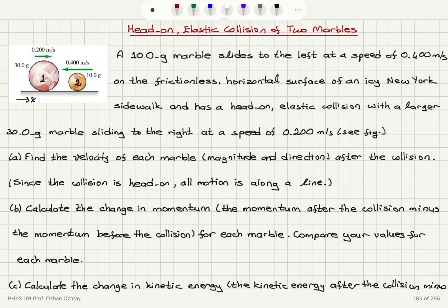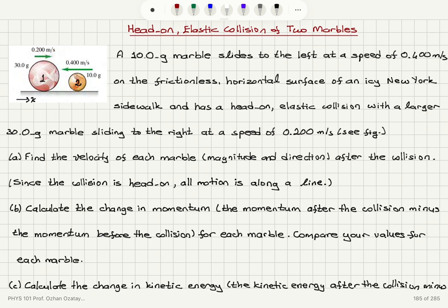Head-on elastic collision of two marbles. A 10 gram marble slides to the left at a speed of 0.4 meters per second on the frictionless horizontal surface of an icy New York sidewalk, and has a head-on elastic collision with a larger 30 gram marble sliding to the right at a speed of 0.2 meters per second. Part A: find the velocity of each marble — magnitude and direction — after the collision. Since the collision is head-on, all motion is along a line.